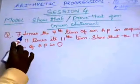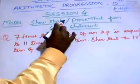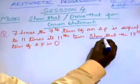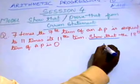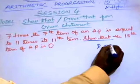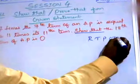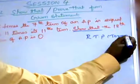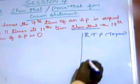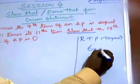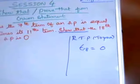Now this is a model. They give a statement, and from that statement you have to prove or show something. So what you have to prove — this is required to prove. RTP means required to prove. We have to prove that the 18th term is equal to 0. This is what you must prove.